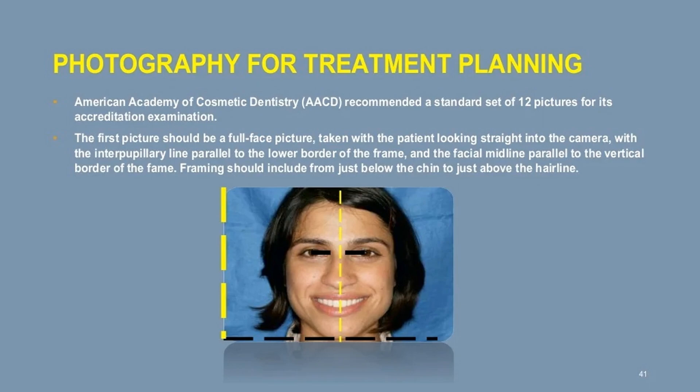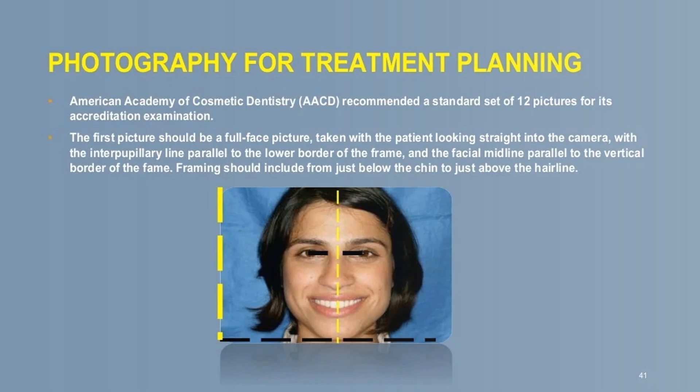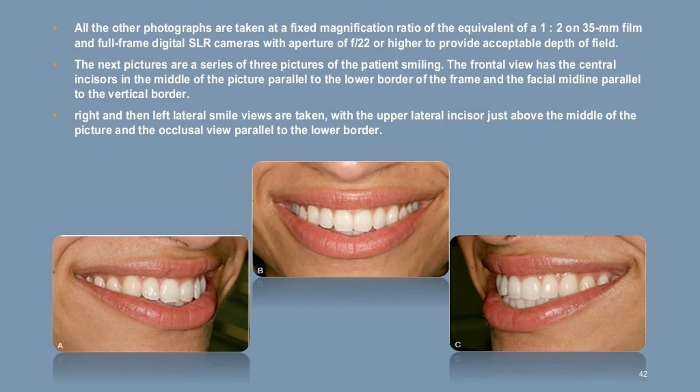The American Academy of Cosmetic Dentistry (AACD) recommends a standard set of 12 pictures for its accreditation examination. The first picture should be a full-face picture taken with the patient looking straight into the camera, with the interpupillary line parallel to the lower border of the frame and the facial midline parallel to the vertical border, framing from just below the chin to just above the hairline. All other photographs are taken at a fixed magnification ratio of 1:2 on 35mm film and full-frame digital SLR cameras, with an aperture of f/22 or higher to provide acceptable depth of field.